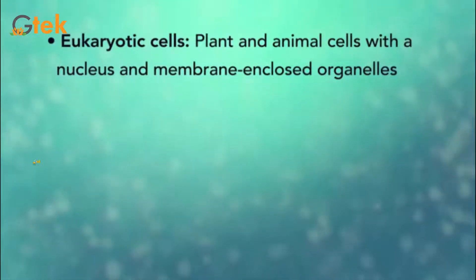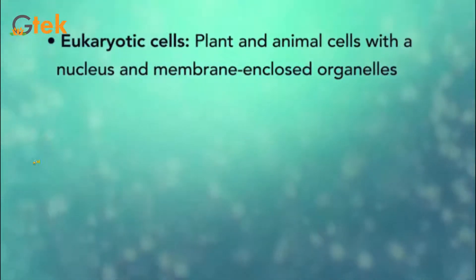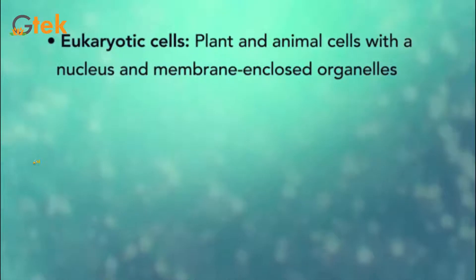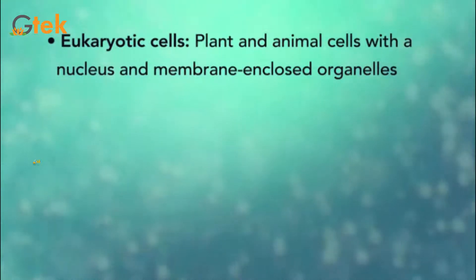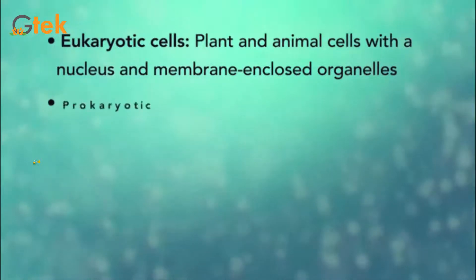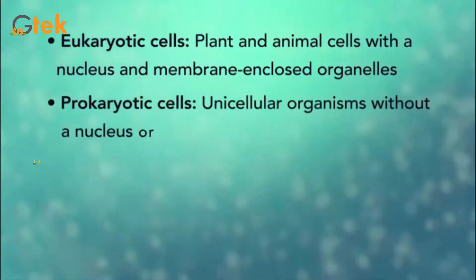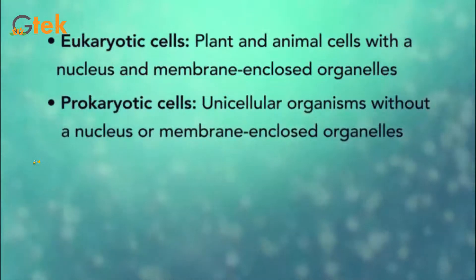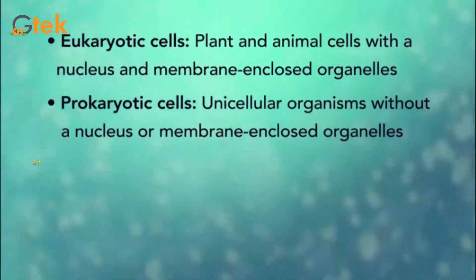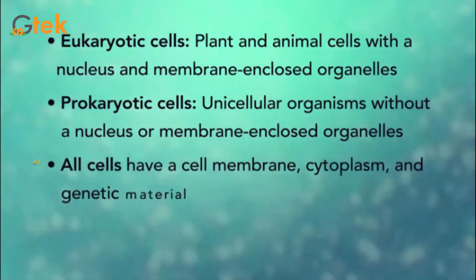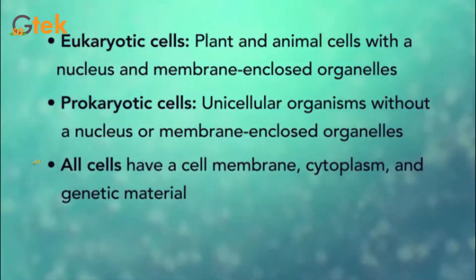The eukaryotic cell — the plant and animal cell — has a nucleus and membrane-enclosed organelles. But all cells have a cell membrane, cytoplasm, and genetic material.